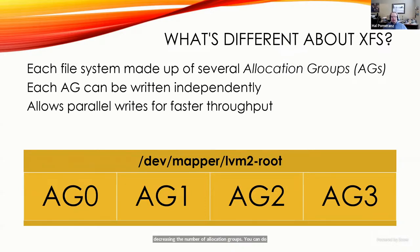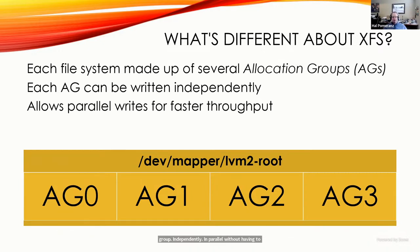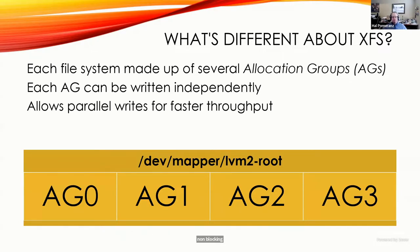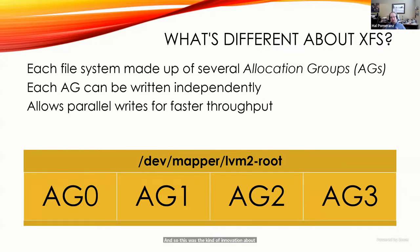Each allocation group is basically an independent filesystem — it has its own inodes, its own superblock, and so on. The idea is that you can write into each allocation group independently in parallel without having to lock up the entire filesystem. This gives better throughput if you have multiple processors, because you can have at least one non-blocking write thread per allocation group. This was SGI's key innovation to improve throughput on their multi-processor architectures.